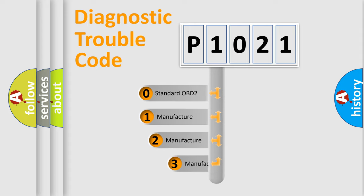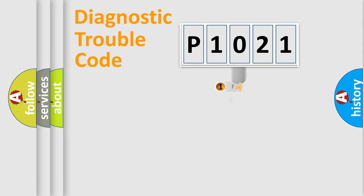If the second character is expressed as zero, it is a standardized error. In the case of numbers 1, 2, 3, it is a manufacturer-specific error.